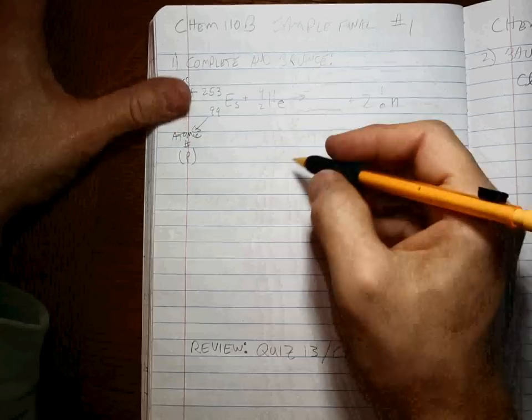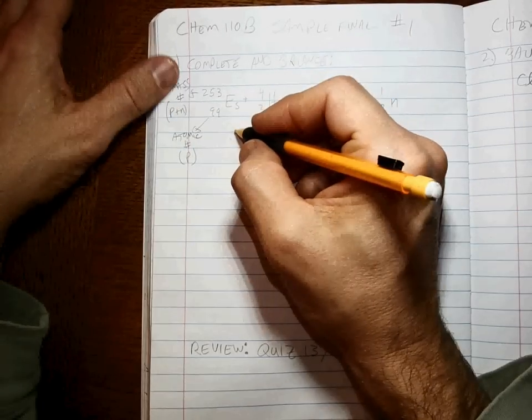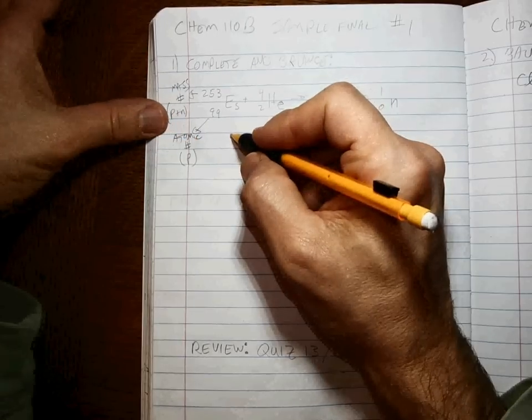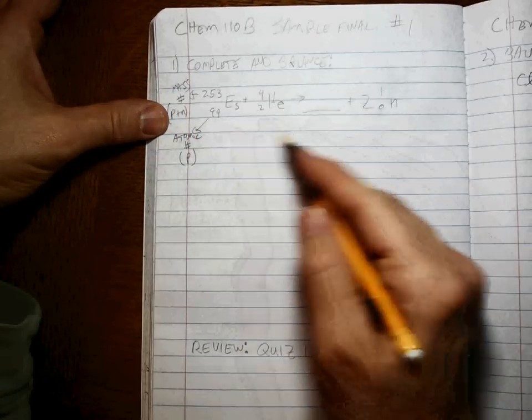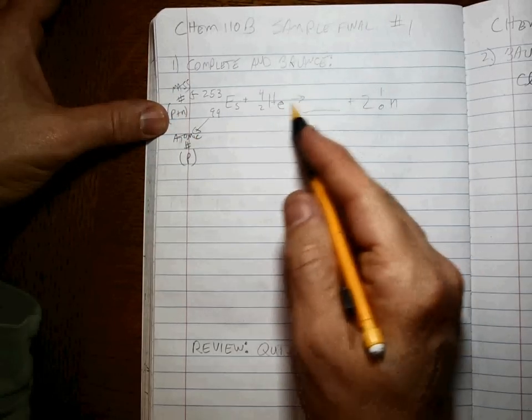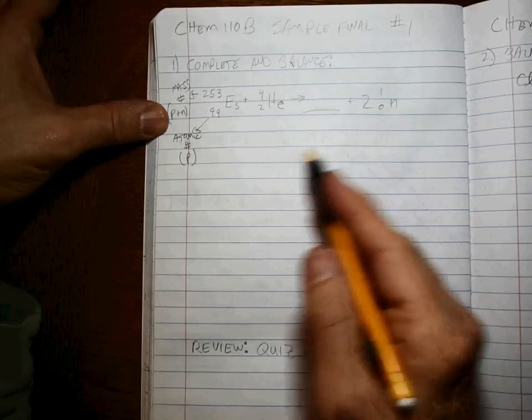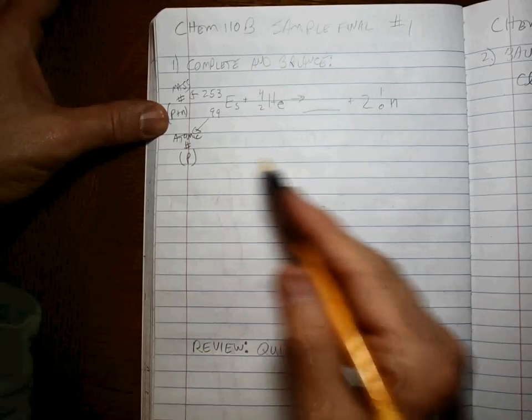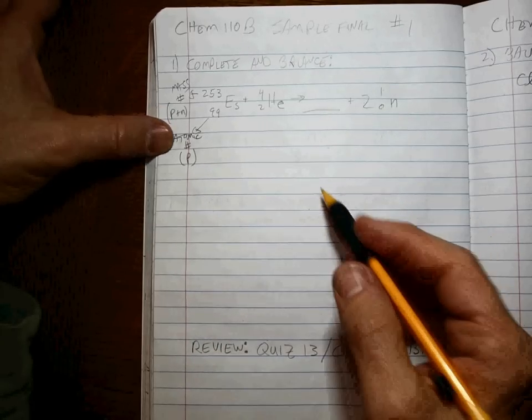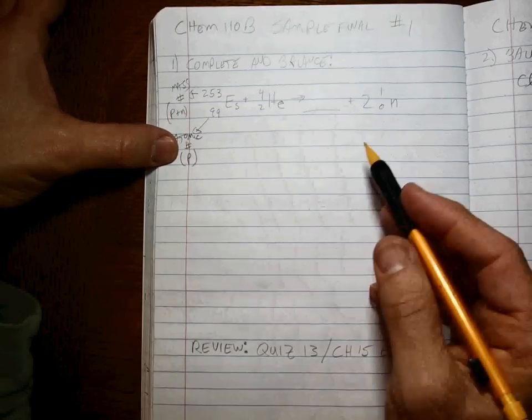All right, so remember, the way this works is mass number total on the reactants has to equal the mass number total on the product side, and the same with the atomic number. All the numbers have to add up. The number of protons and neutrons have to be the same on both sides.